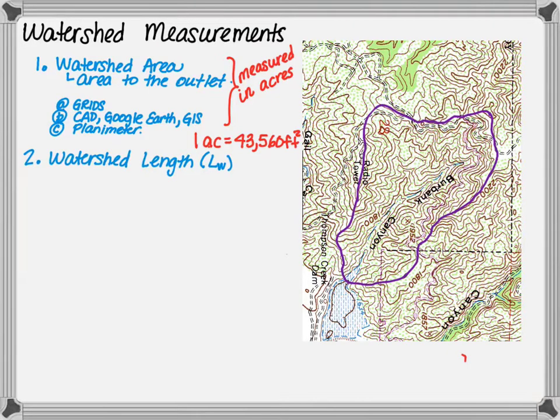Next we have the watershed length or LW. The watershed length is shown in the black dashed line provided on the Burbank Canyon watershed. It is the distance along the main channel from the outlet and extends to the basin divide and in the US is measured in feet.